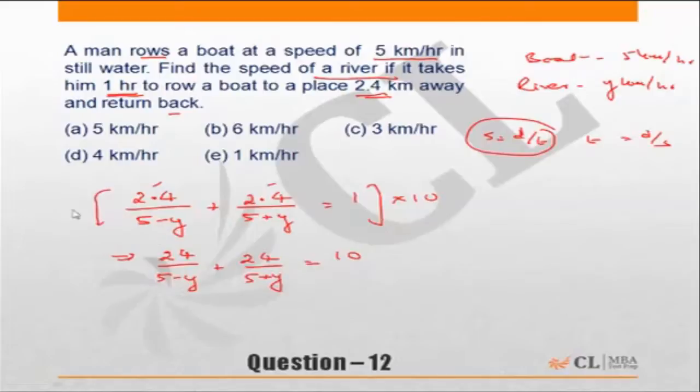Obviously y has to be less than 5, so choice A and B go, both of them go. 3, 4, or 5, check out which one. Secondly, go for checking that choice such that both 5 minus y and 5 plus y are factors of 24.